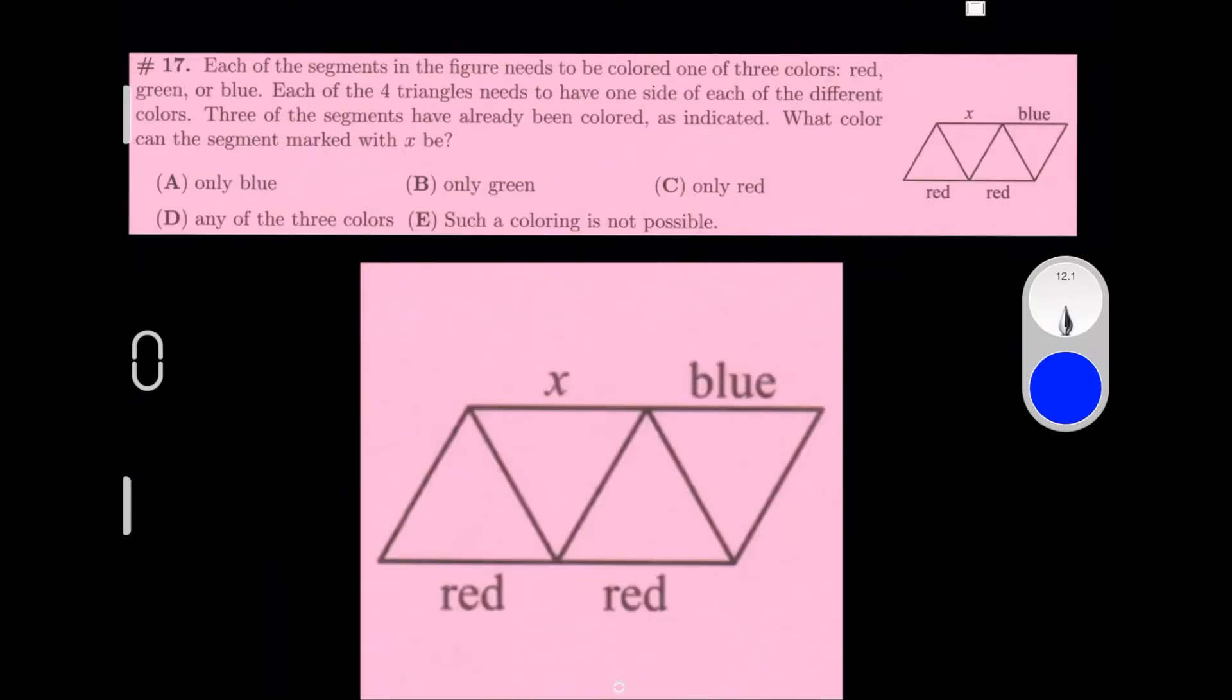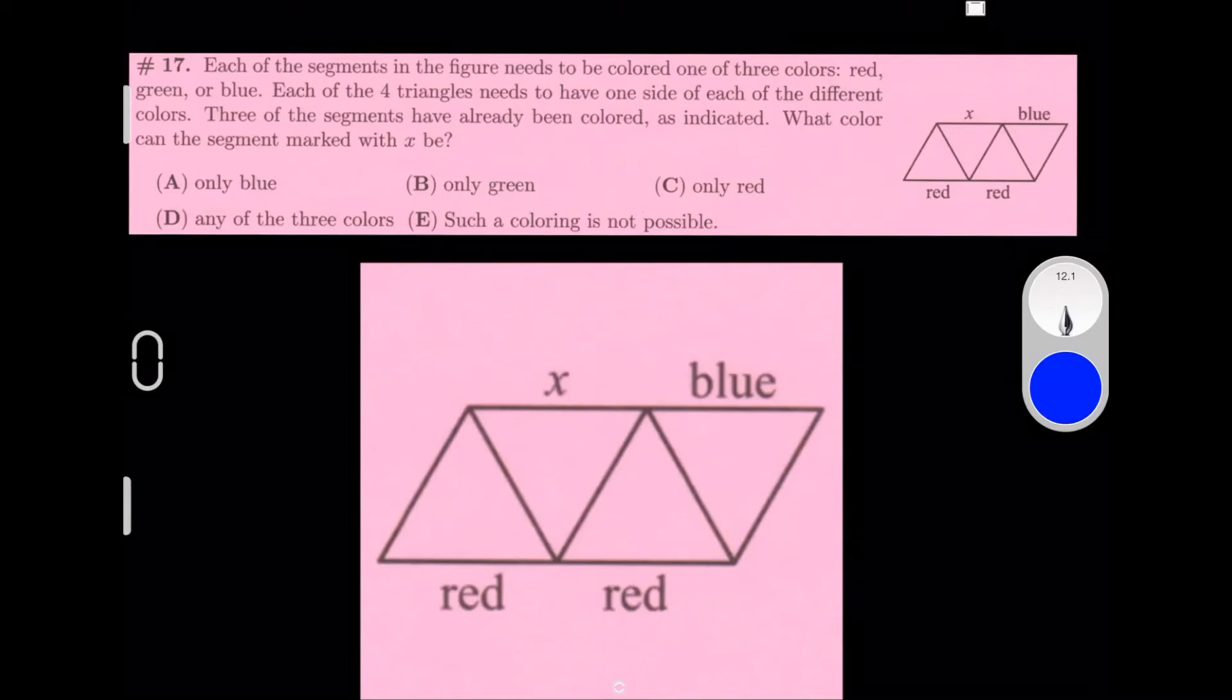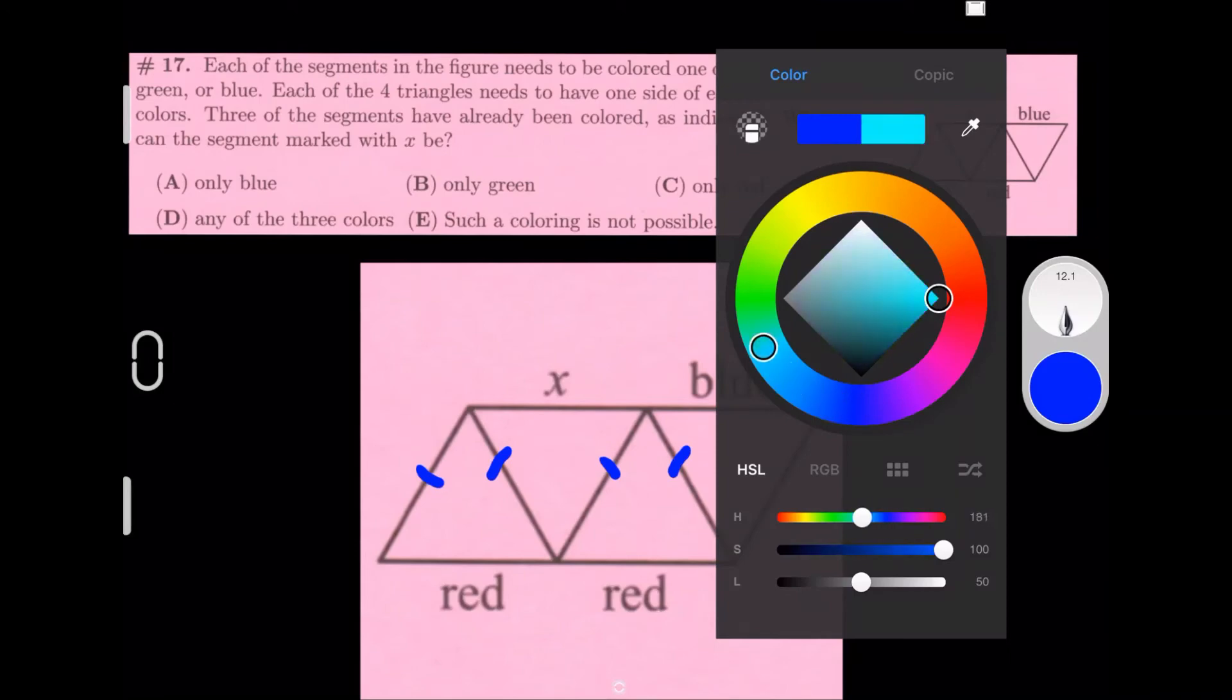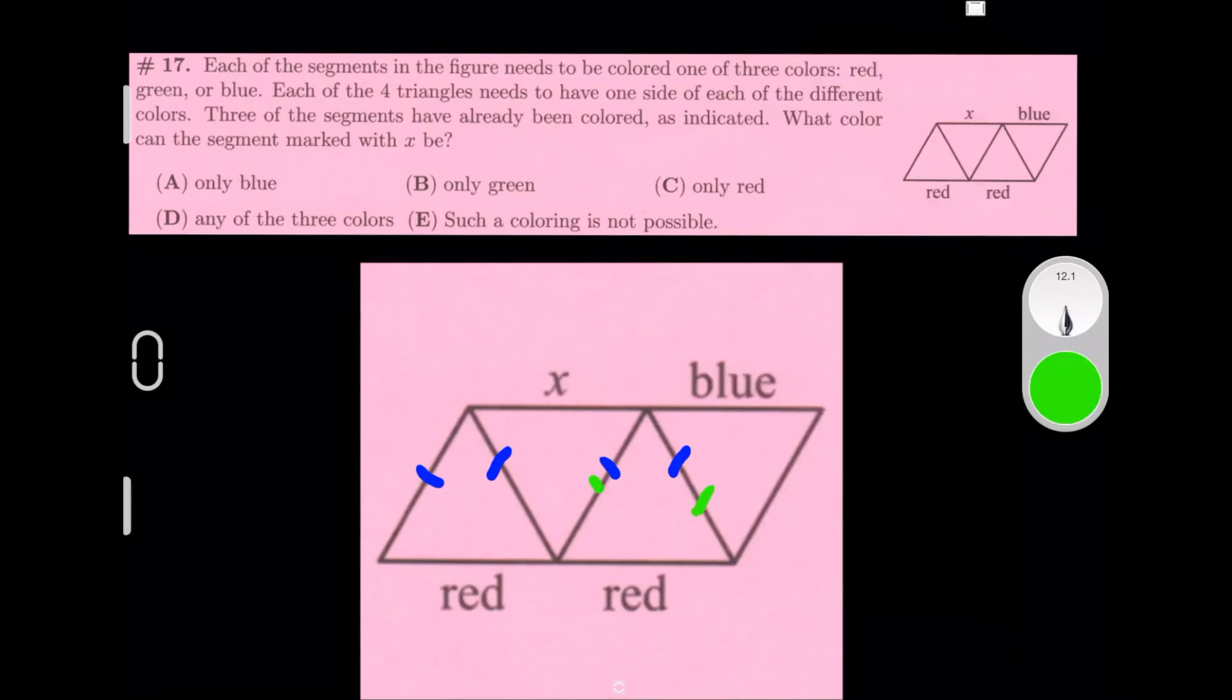Each of the segments in the figure needs to be colored one of the 3 colors: red, green, or blue. Each of the 4 triangles needs to have one side of each of the different colors. 3 of the segments have already been colored as indicated. What color can the segment marked with X be? Right here we already have blue, and we have 2 reds to put in, and there's the X. For this spot right here, we have to have a blue or a green on all 4 of these spots, no matter what, because we have red as the base. We can only have green right here, because we have red right here and there's a blue already right there.